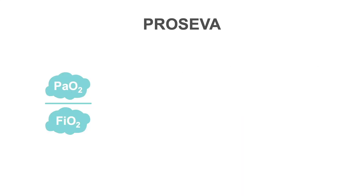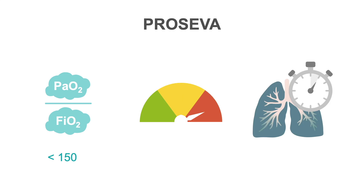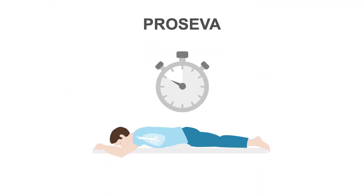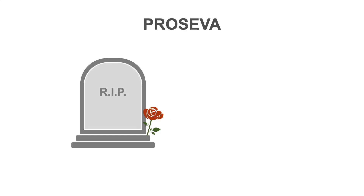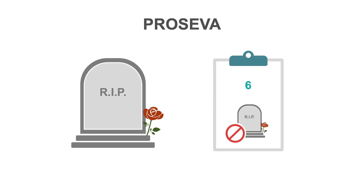How did this study differ from prior prone positioning trials? Patients were enrolled if they had P-to-F ratios less than 150, reflecting moderate to severe ARDS. They were enrolled early in the course of ARDS, and they were proned for a longer duration of time than prior studies, with a target of 16 hours per day. The mortality benefit was significant, and for every 6 patients placed prone, an additional life was saved.